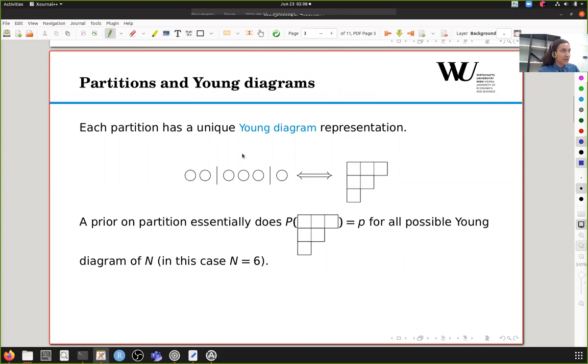Each partition has a unique Young diagram representation. This partition corresponds to this Young diagram, and the way to read this is each row corresponds to each block and the number of columns within each row corresponds to the number of balls within each partition. A prior on partition essentially takes this Young diagram and returns a probability for all possible Young diagrams of sample size n, in this case n equals 6.